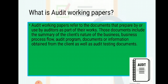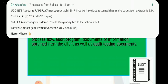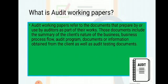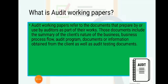Those documents include the summary of the client's nature of business, business process flow, audit program, documents or information obtained from the client, as well as auditing testing documents. These include documents like memorandum of association, articles of association, previous financial statements, agreements, property agreements, furniture bills, etc.